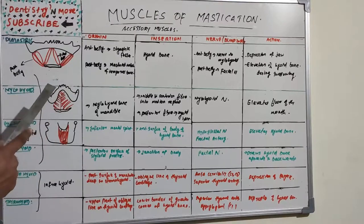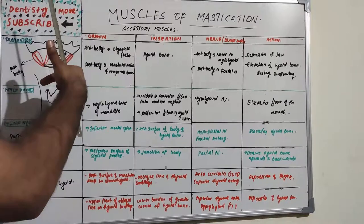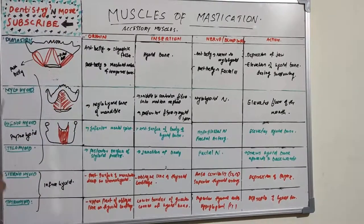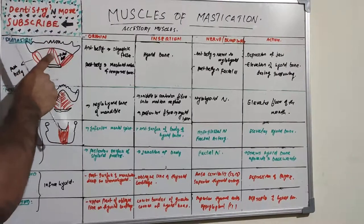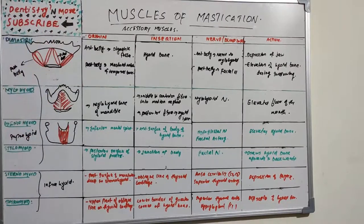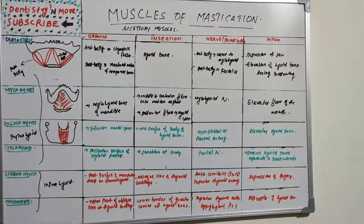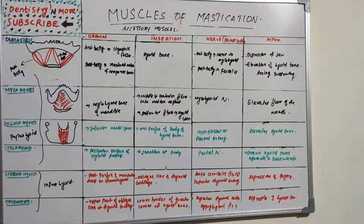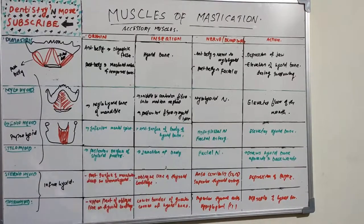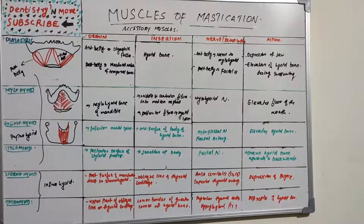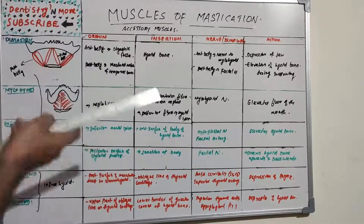The mylohyoid muscle is a flat rectangular muscle lying deep to the anterior belly of the digastric and forms the floor of the mouth. It originates from the mylohyoid line of the mandible. The anterior and middle fibers insert into the median raphe, and the posterior fibers insert into the body of the hyoid bone. Nerve supply is by the nerve to mylohyoid. Its function is depression of the mandible, elevation of the hyoid bone, and elevation of the floor of the mouth to assist in deglutition.